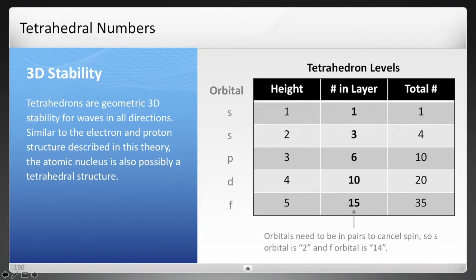Now before we get into orbitals, it's worth talking about the tetrahedron structure. The proton is a pentaquark. It's most likely a tetrahedron, just like the electron was explained to be a tetrahedron of 10 wave centers.